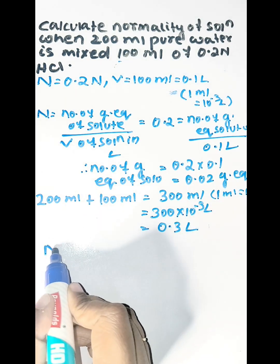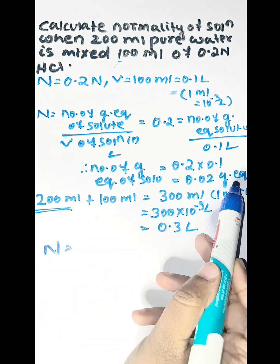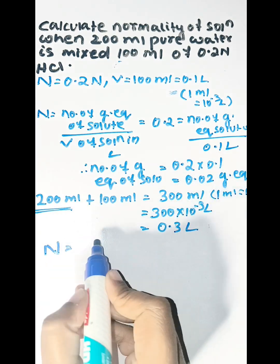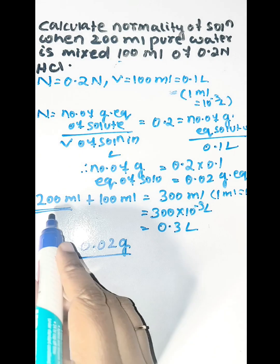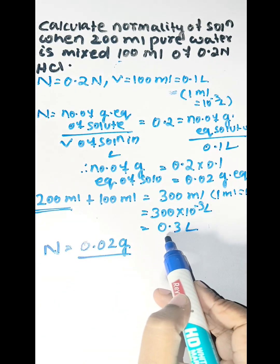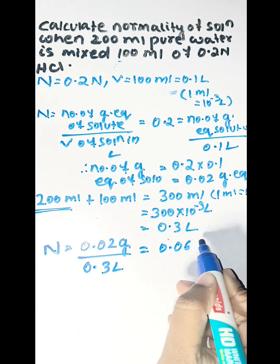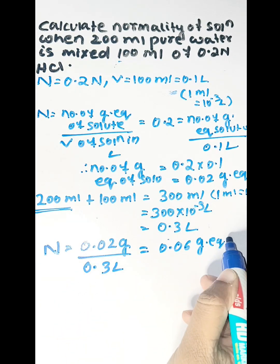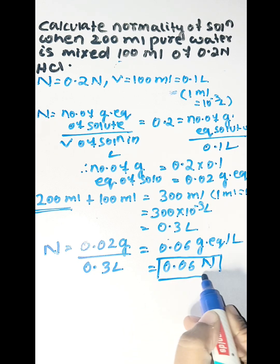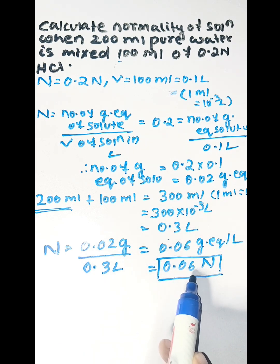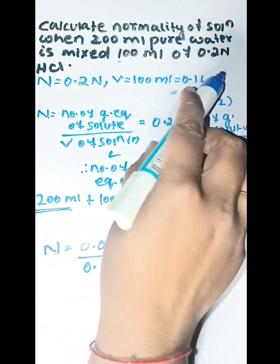The new normality after adding 200 ml of water is calculated using the same number of gram equivalents of solute, which remains 0.02 gram equivalents since no solute was added. The volume of solution is now 0.3 liter. Solving gives 0.02 / 0.3 = 0.06 gram equivalents per liter, or 0.06 N. So the normality changes to 0.06 N after 200 ml of pure water is added to 100 ml of 0.2 N HCl.